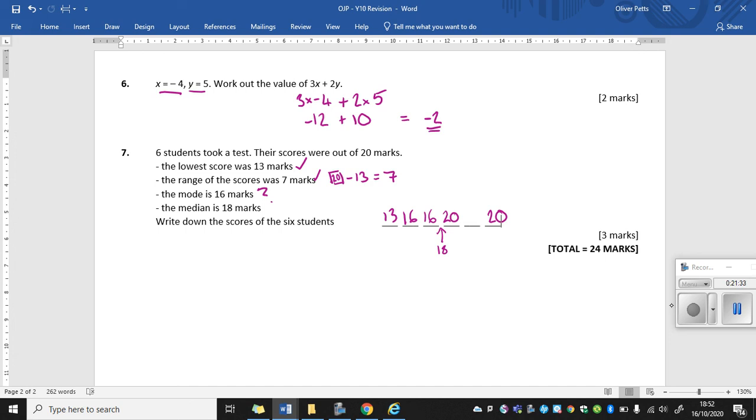But if my next number is 20, and all my numbers are in order, then that means that this number here has also got to be 20. Now this is a big problem. Because obviously my mode has got to be 16 marks. But at the minute, it looks like my mode is 20 marks. And you would be absolutely spot on. Because sadly, when I made this homework, I made a big mistake.